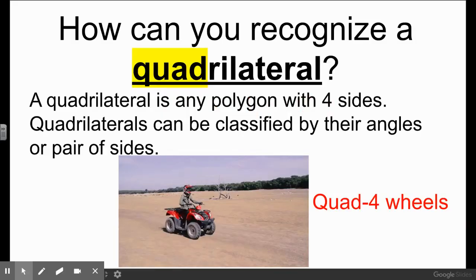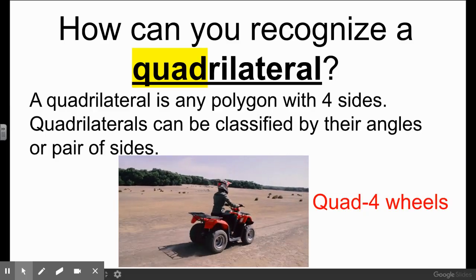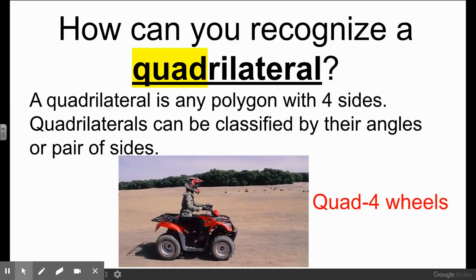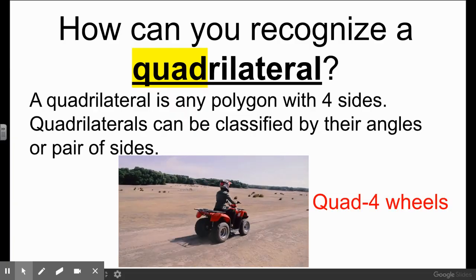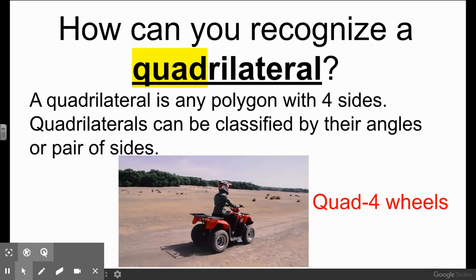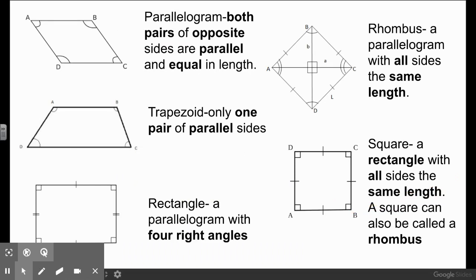Now we also talked about quadrilaterals — a quadrilateral is any polygon with four sides. Quadrilaterals can be classified by their angles or pairs of sides. I referred it back to a quad: a quad has four wheels, therefore a quadrilateral is a shape that has four sides. A parallelogram has two pairs of parallel sides. A trapezoid only has one pair of parallel sides because the other pair of sides would eventually cross.